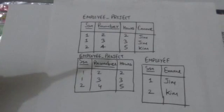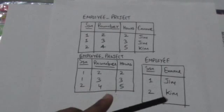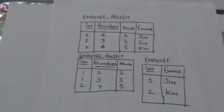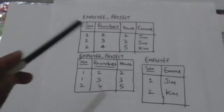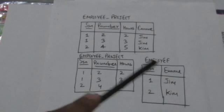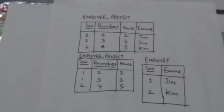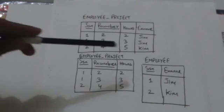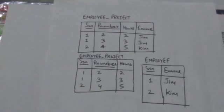We can decompose this relation into two 2NF relations. We will remove the ename attribute from this relation and place it in a separate relation employee along with the part of the primary key, that is attribute SSN, on which ename attribute is fully functionally dependent. SSN will be the primary key of the employee relation.